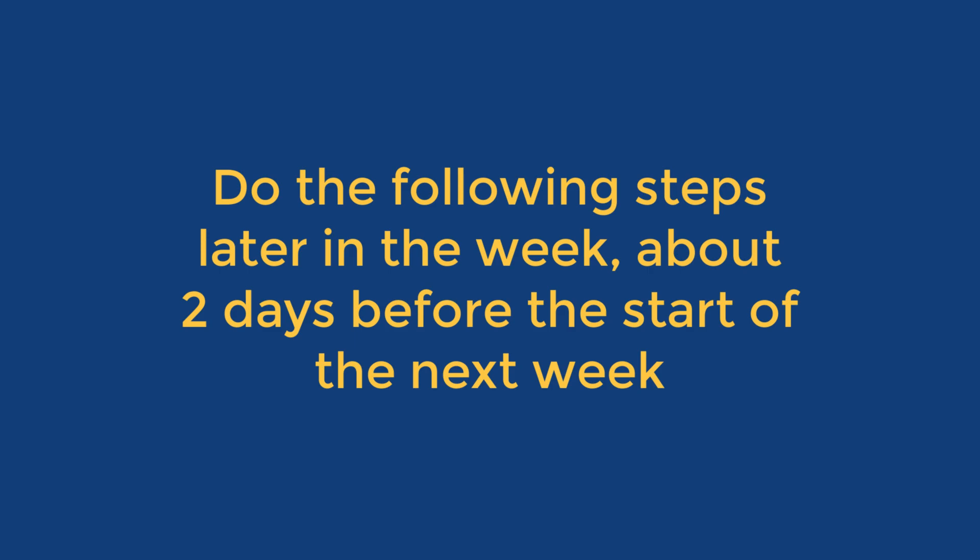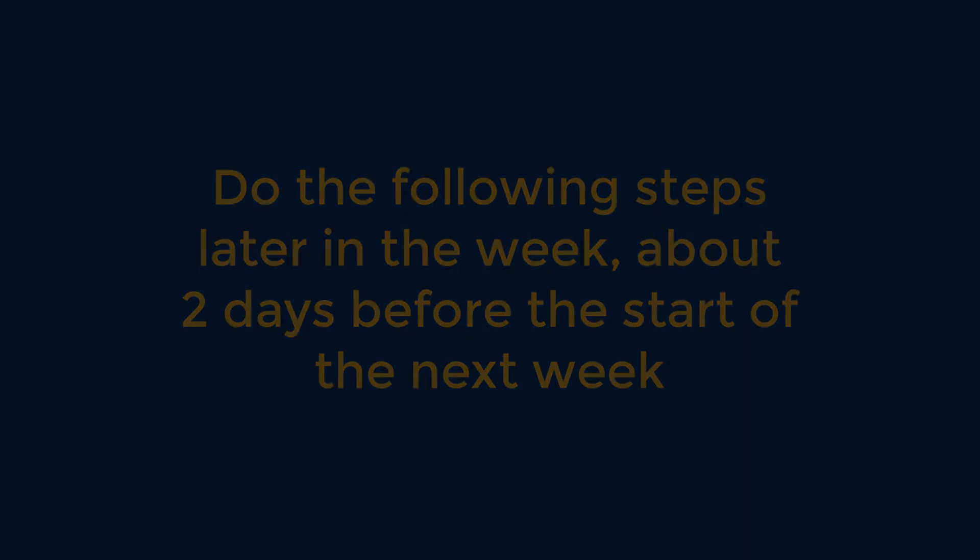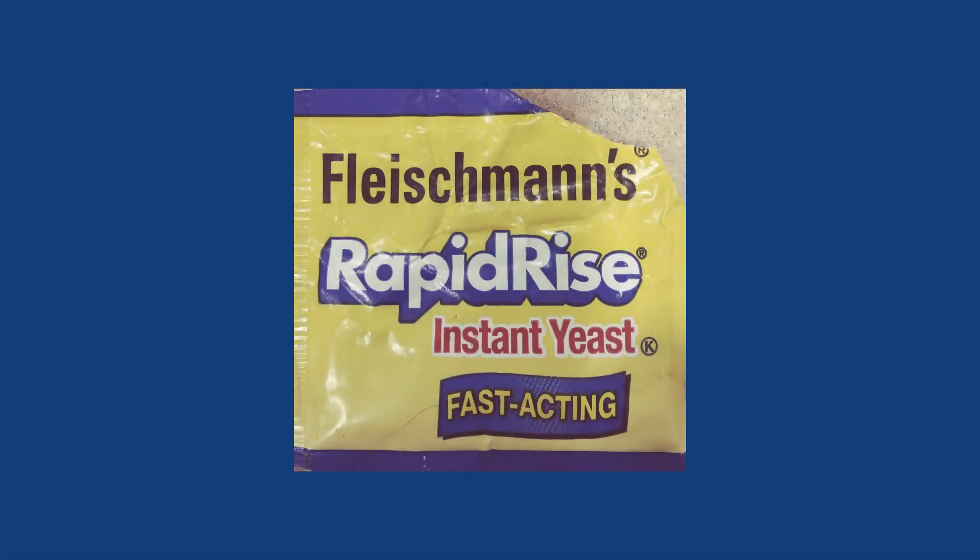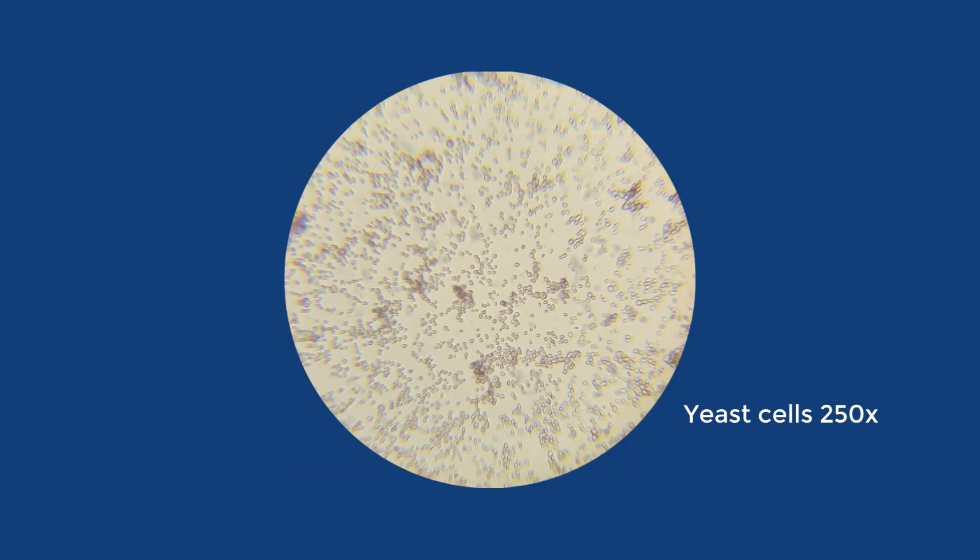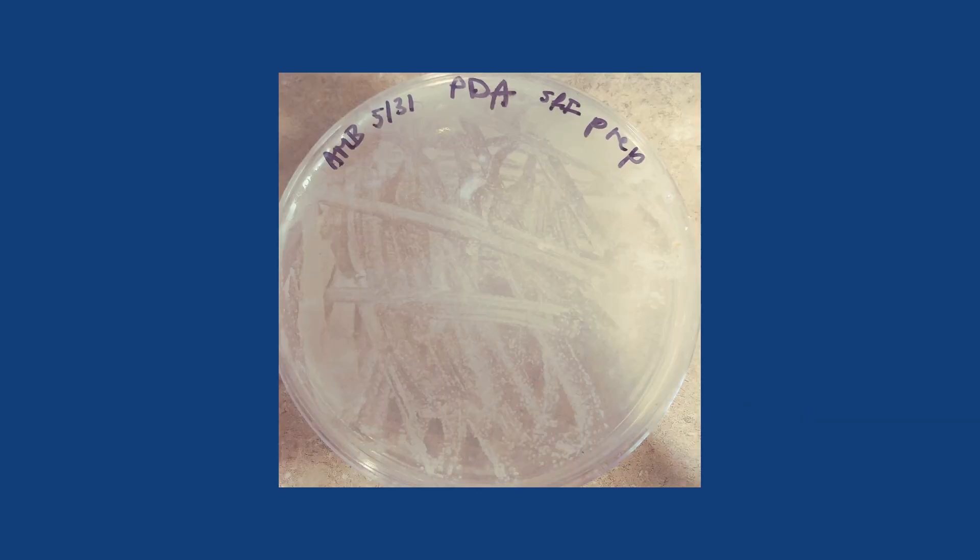Next week, you will learn to streak microbes for isolation. For that activity, we will use baker's yeast, the same yeast that you would bake with. This ensures your safety while you practice this important technique. Baker's yeast is a single-celled fungus, Saccharomyces cerevisiae, that forms colonies on agar plates, just like bacteria do.